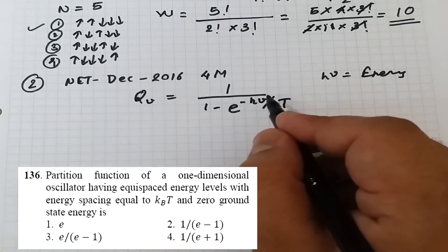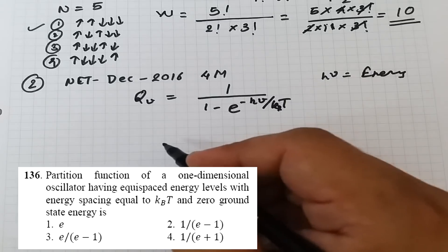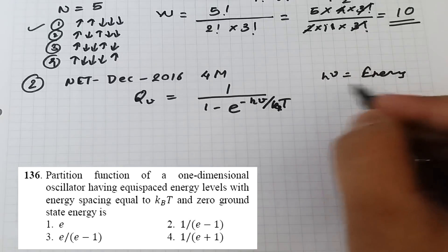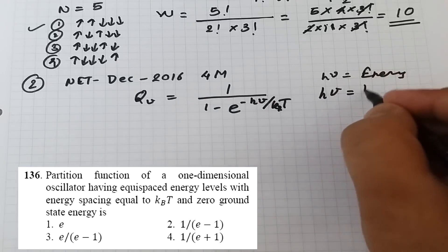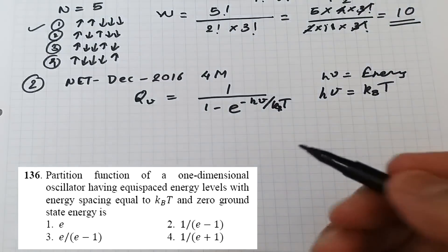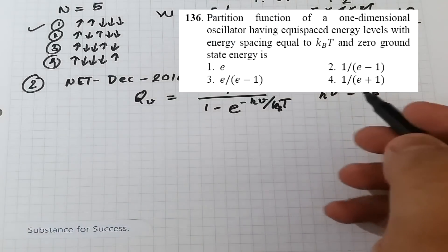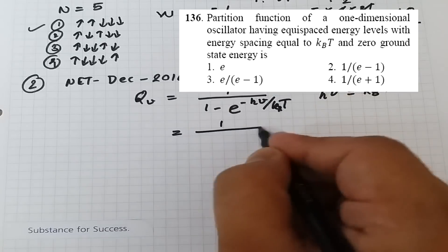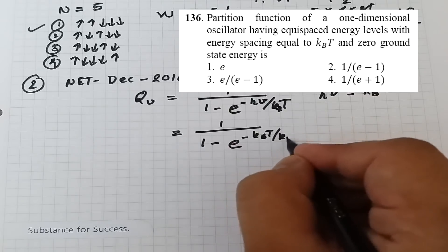We are given that the energy levels have equal spacing equal to k_BT. So we substitute hν = k_BT into the expression. This gives: q_v = 1 / (1 − e^(−k_BT / k_BT)). The k_BT terms cancel, leaving: q_v = 1 / (1 − e^(−1)).